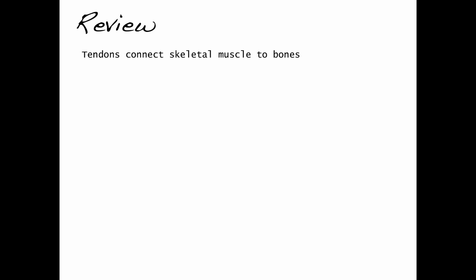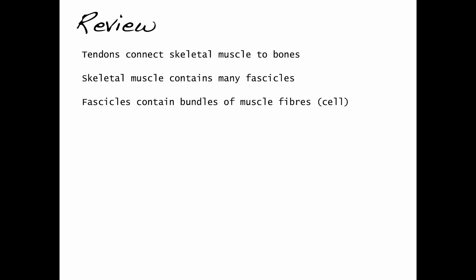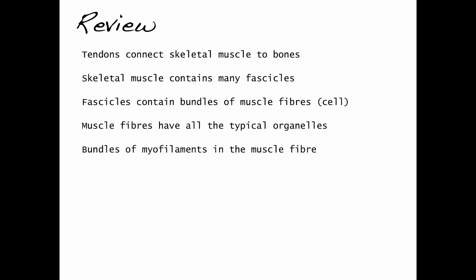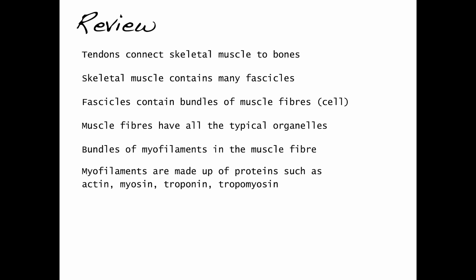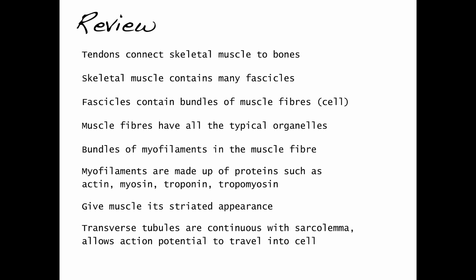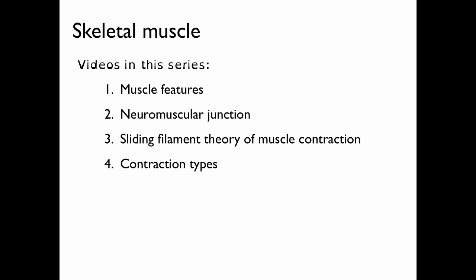Let's review. Tendons connect skeletal muscle to bones. Within skeletal muscles, there are many fascicles. Fascicles contain bundles of muscle fibers, which are the cells. Muscle fibers have many of the typical organelles, including mitochondria, nuclei, and endoplasmic reticulum. Within the muscle fiber, there are bundles of myofilaments, and these myofilaments are made up of proteins such as actin, myosin, troponin, and tropomyosin. These proteins give muscle its striated appearance. Finally, transverse tubules are continuous with the sarcolemma and allow action potentials to travel into the cell. In this video, I've covered some basic anatomical features of skeletal muscles.